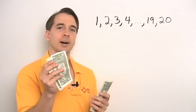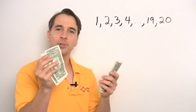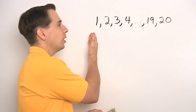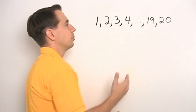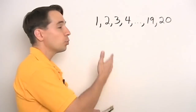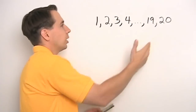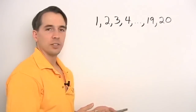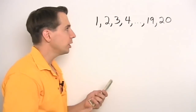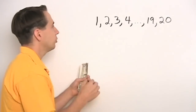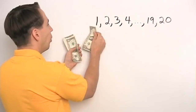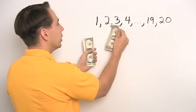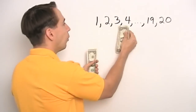It turns out this is a really good way to count. For example, if we wanted to count the number of numbers in this list, well obviously there are twenty numbers from one up to twenty. And we can see that because if the stack had twenty dollar bills, we'd count it just like this: one, two, three, four.